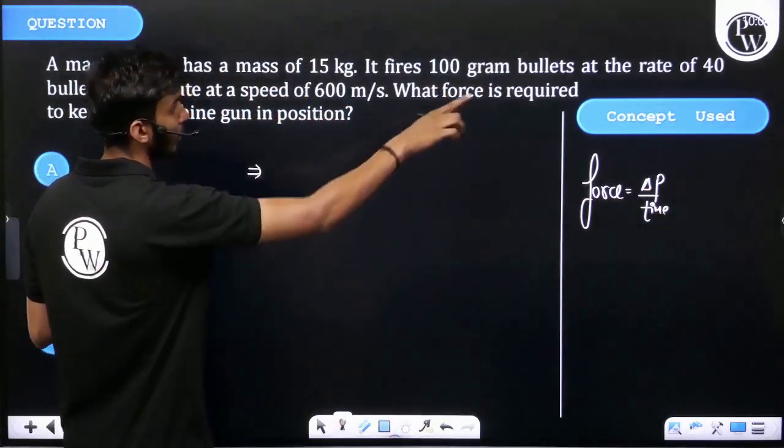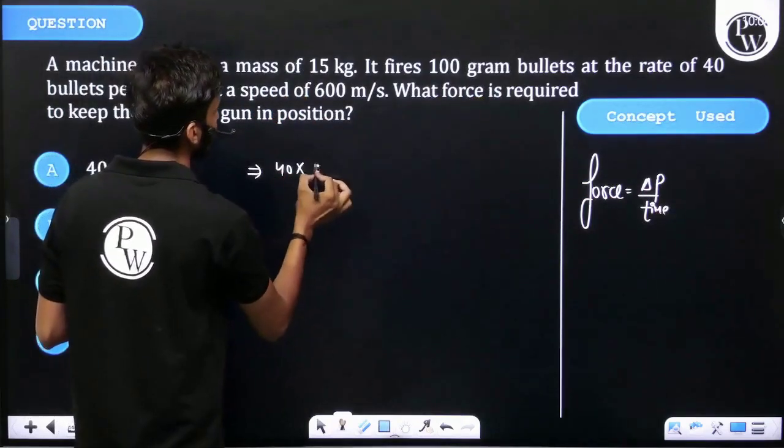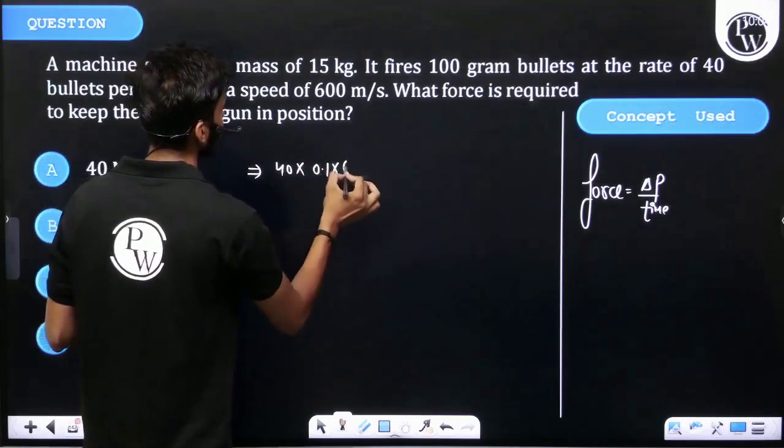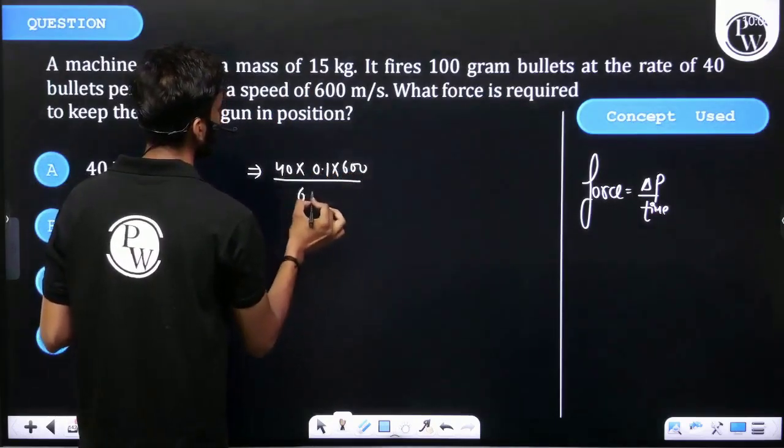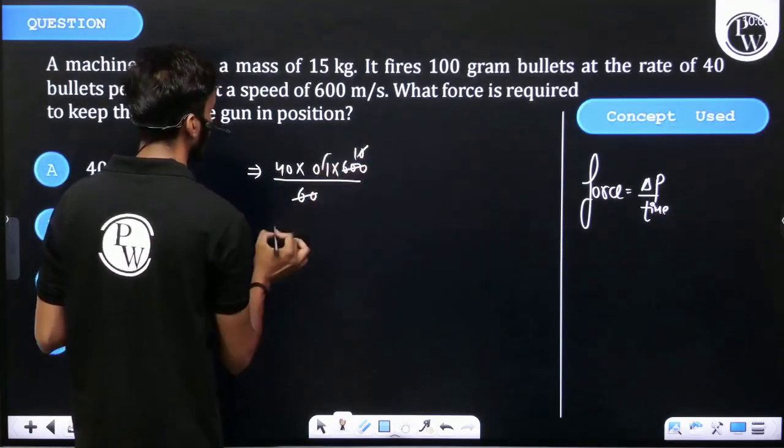Then we can write: number of bullets is 40, mass is 100 grams, that is 0.1 kilograms, velocity is 600 meters per second. Time is per minute, that means 60 seconds. Then 60 times 10 times 0.1 cancel out. The force on the bullet equals 40 Newtons.